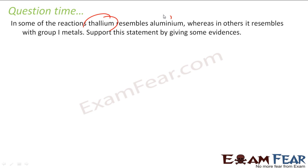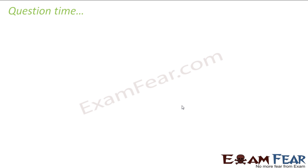The next question is in some reactions thallium behaves as aluminum, in some it behaves as group one element. If you see, thallium has oxidation states of plus 3 and plus 1. Why plus 3? Plus 3 because it is part of group 13, and plus 1 because of the inert pair effect. When it is in plus 3 oxidation state it behaves like aluminum, when it is plus 1 oxidation state it behaves like a group one element.